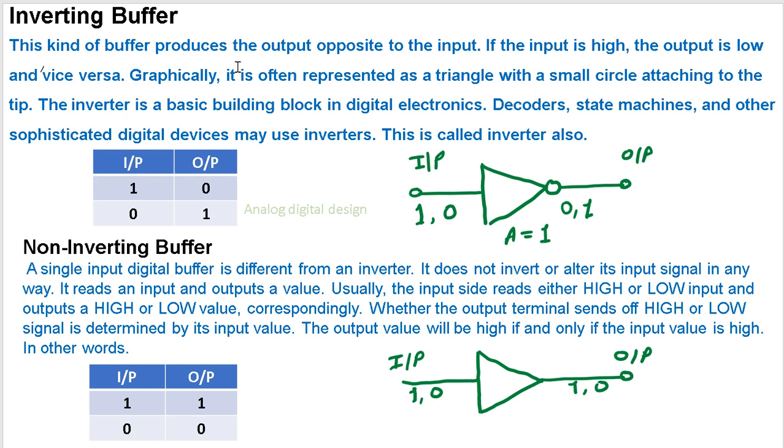This kind of buffer produces the output opposite to input. If the input is high, the output is low and vice versa. Graphically, it is often represented as a triangle with a small circle attaching to the tip.